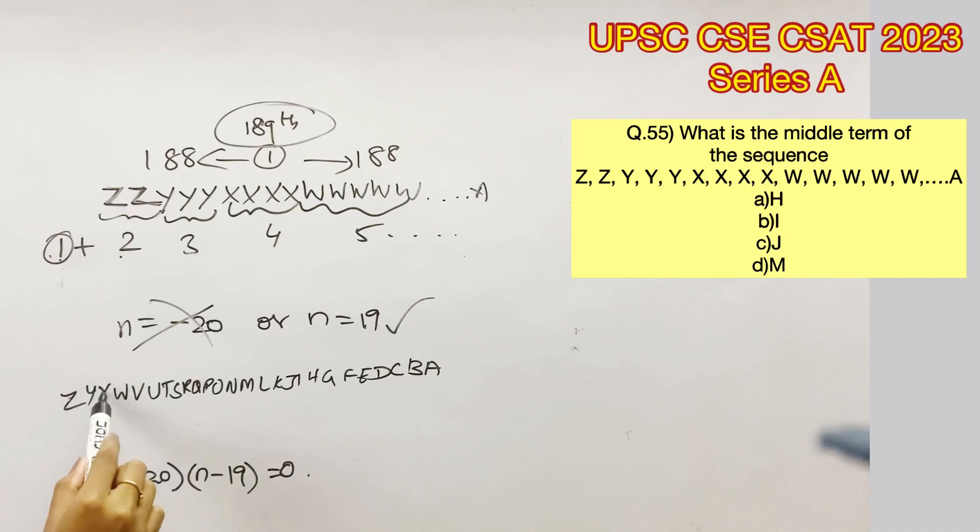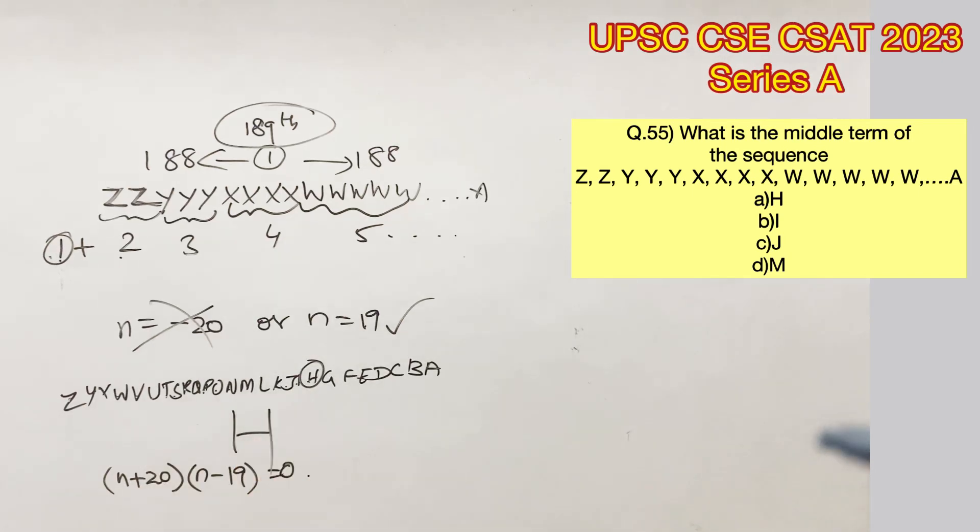So writing the alphabet sequence in the reverse order, the 19th letter would be H. Therefore, option A is the right answer.